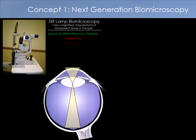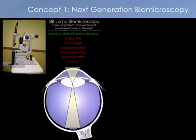Slit lamp biomicroscopy is good at detecting eye disease, but it's subjective and inconsistent, meaning it's based on the attention and training of the examiner. The examiner is also required to write down all findings accurately and pseudo-quantitatively. If they fail to document something on exam, it might as well not have been there. It's time-consuming to have an examiner perform a slit lamp examination, and therefore it's costly, and it's somewhat uncomfortable for patients.